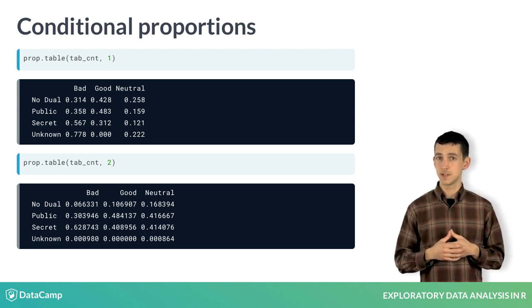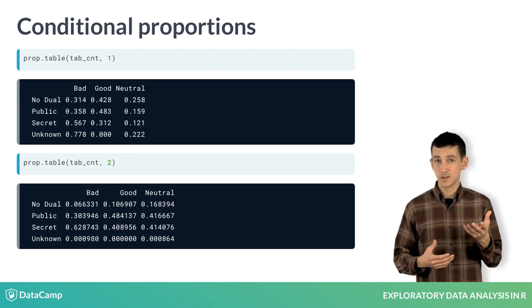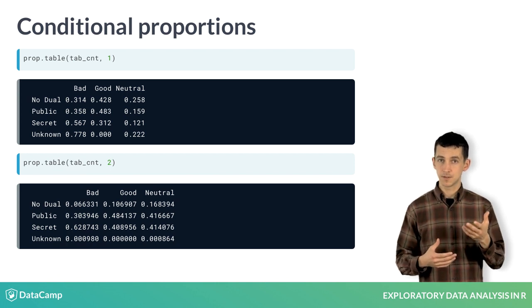To condition on the columns instead, you can change that argument to 2. Now it's the columns that sum to 1, and we learn, for example, that the proportion of bad characters that are secret is around 63%.